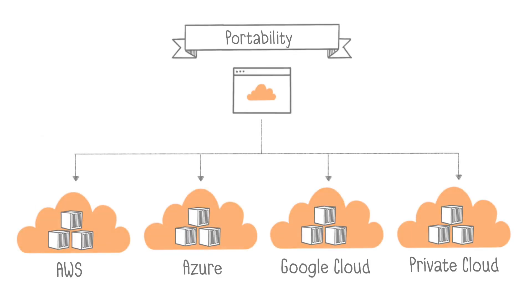The cloud-native approach also allows applications to be more portable, thus breaking free from dependencies on a particular cloud provider. Since a container encapsulates an application and all its dependencies, such as libraries or binaries, it's easier to decouple the microservice from the underlying infrastructure. A containerized microservice can run on any infrastructure, including across different cloud providers.